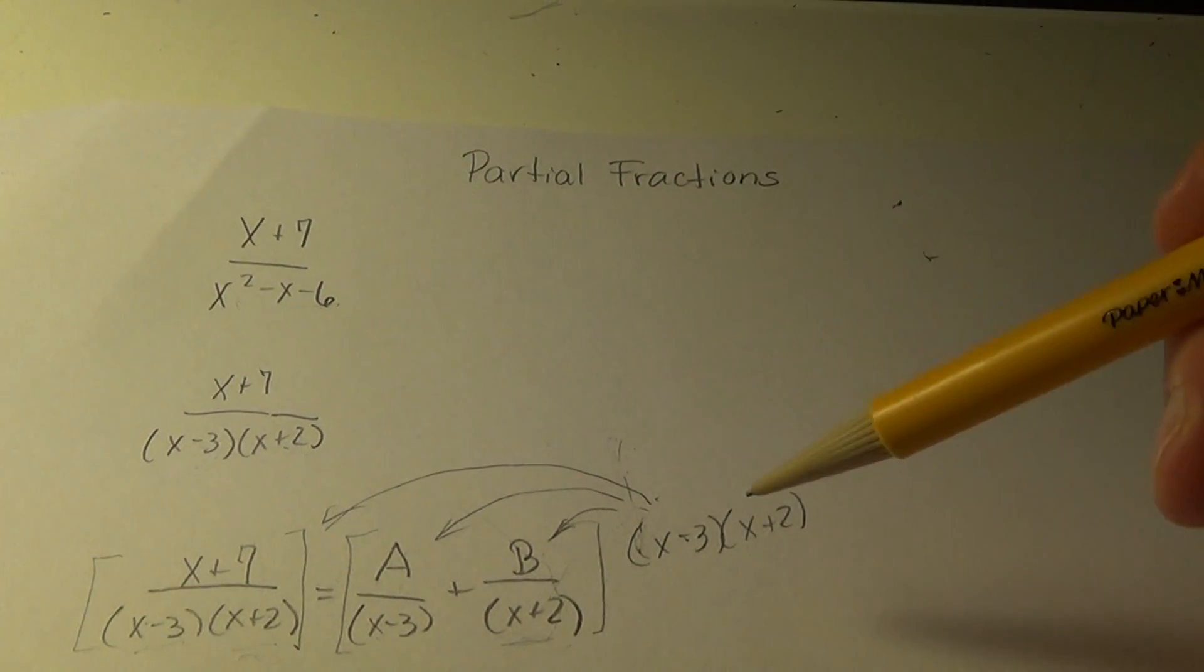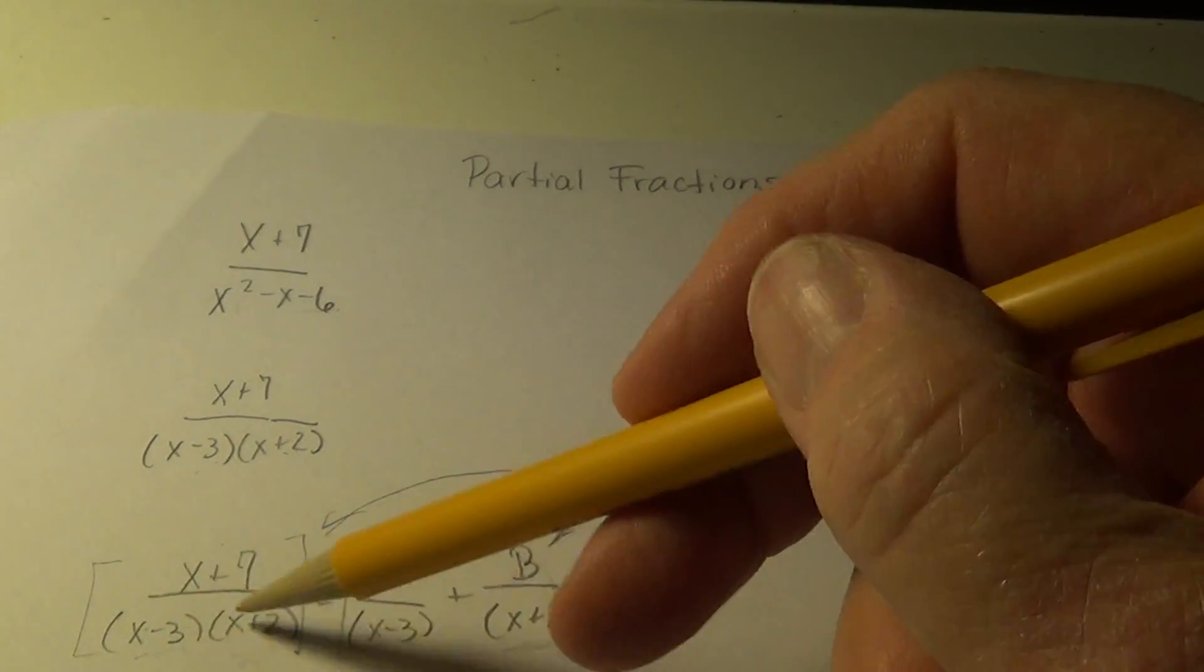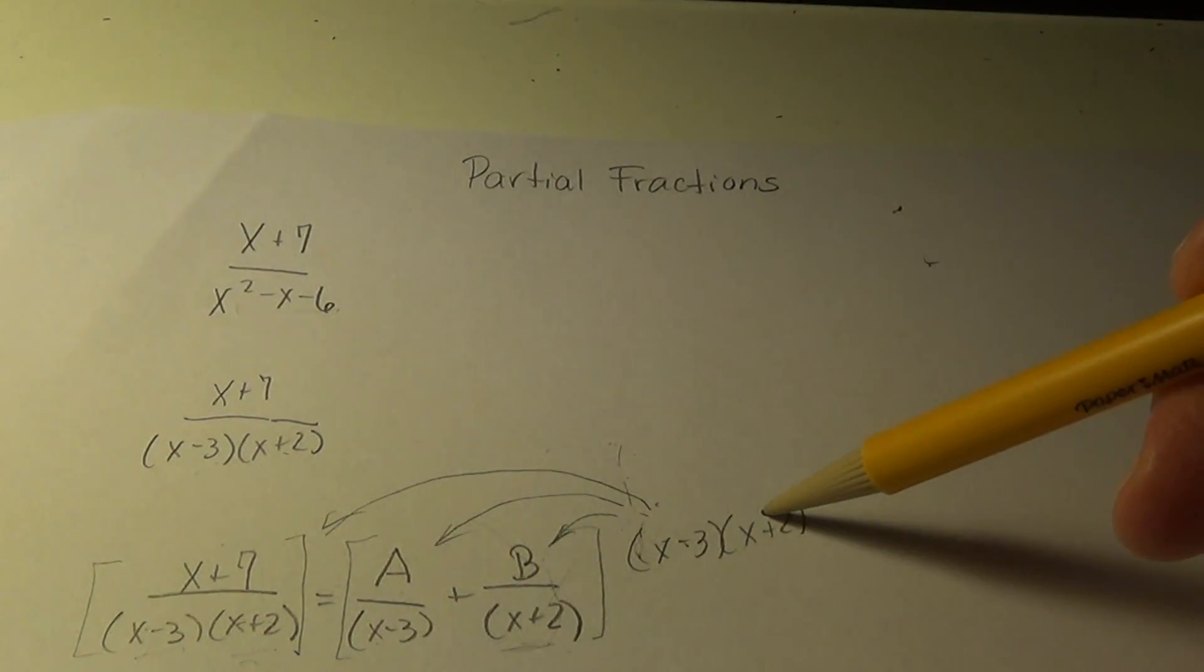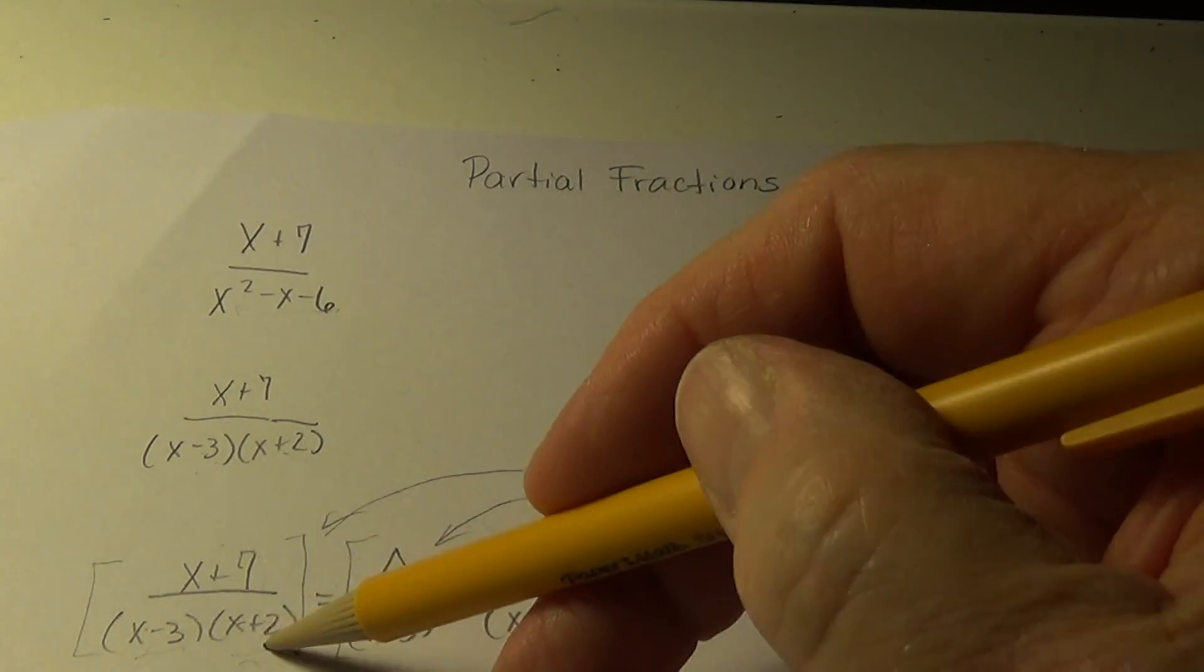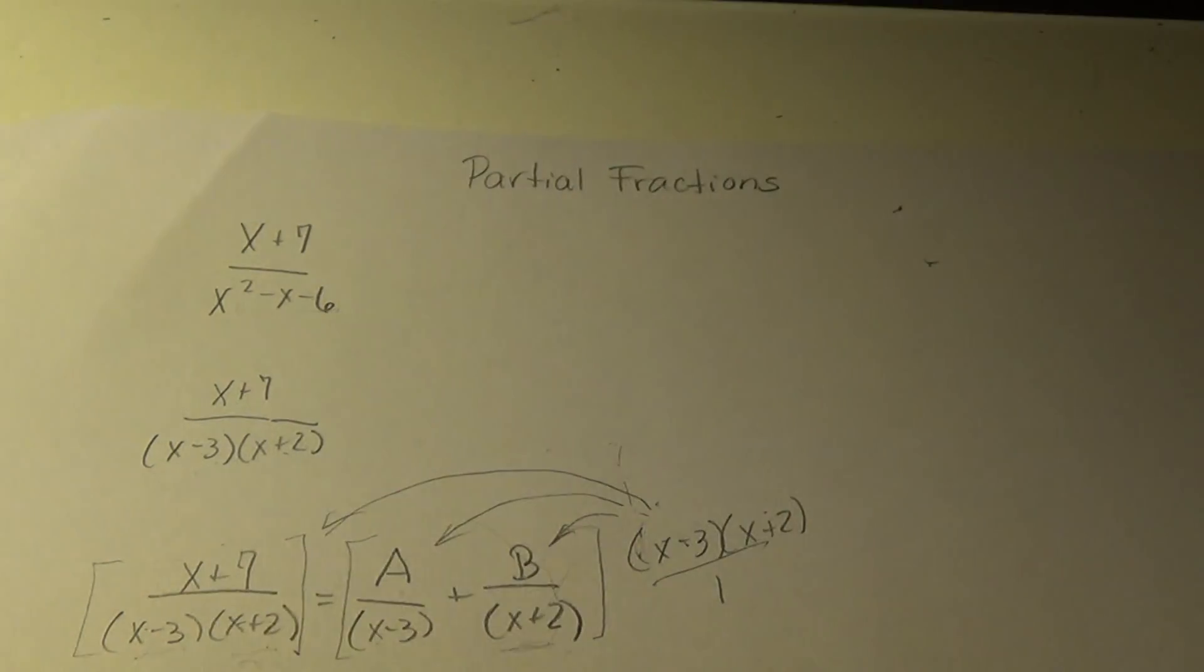So notice when I multiply this one times this, these two cancel these two. These are in the numerator, this is in the denominator, this is in the denominator, and it leaves an x plus 7.